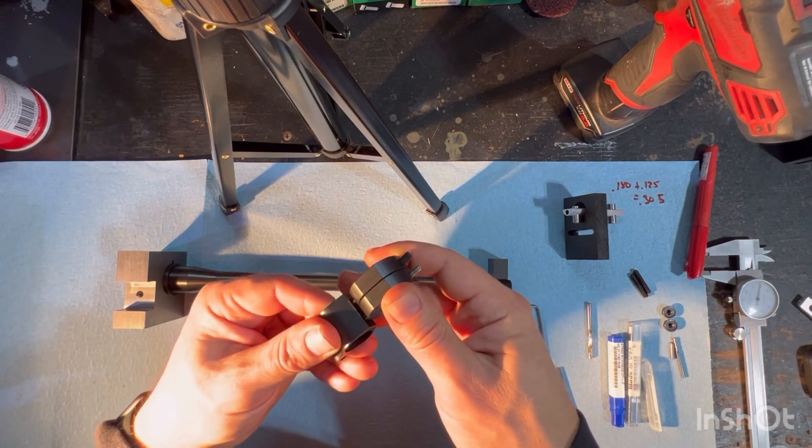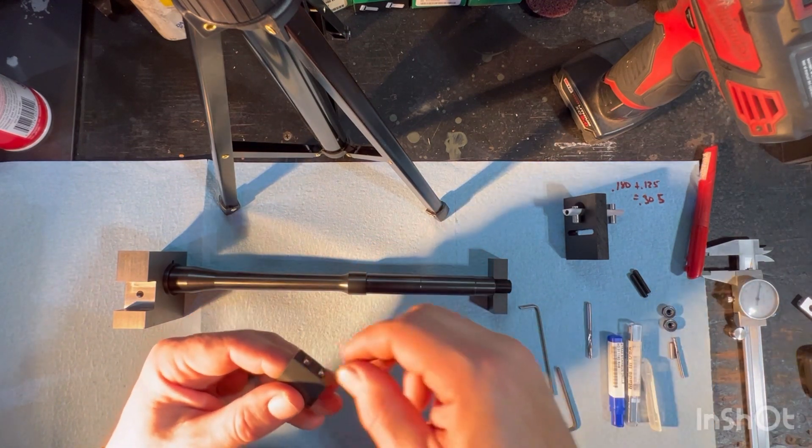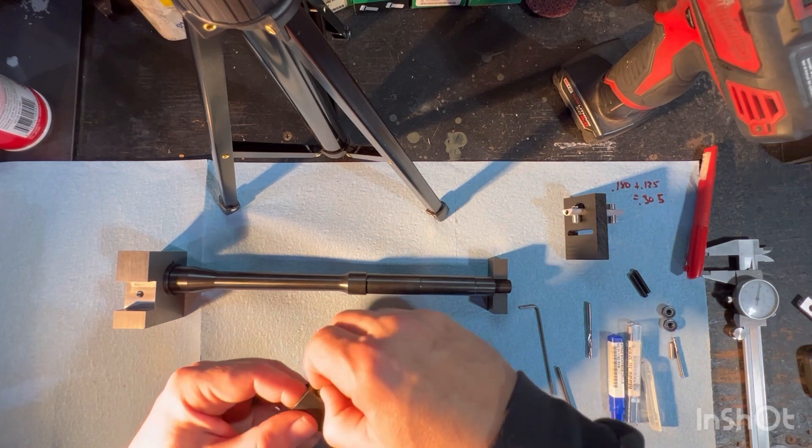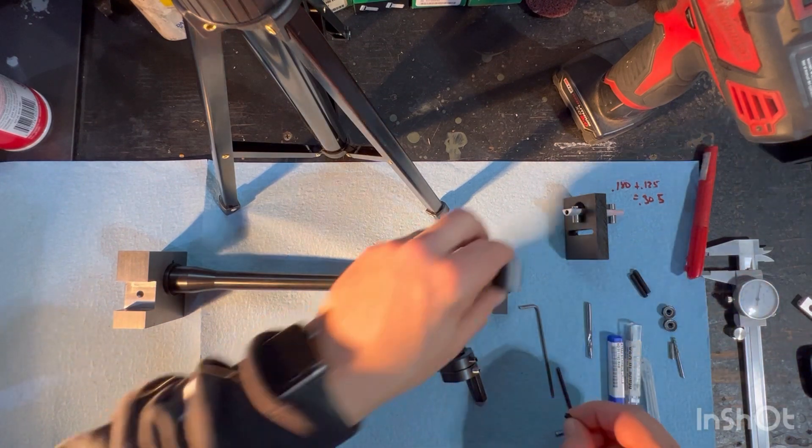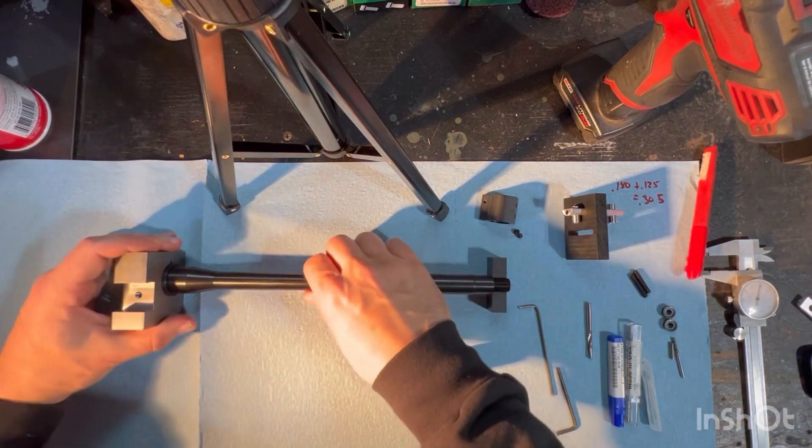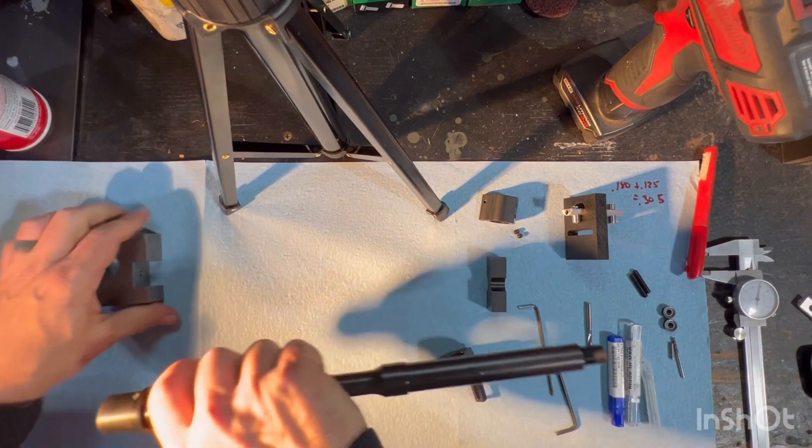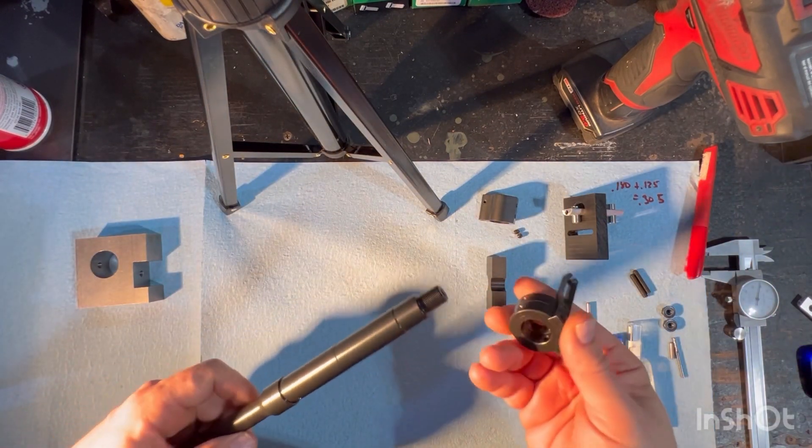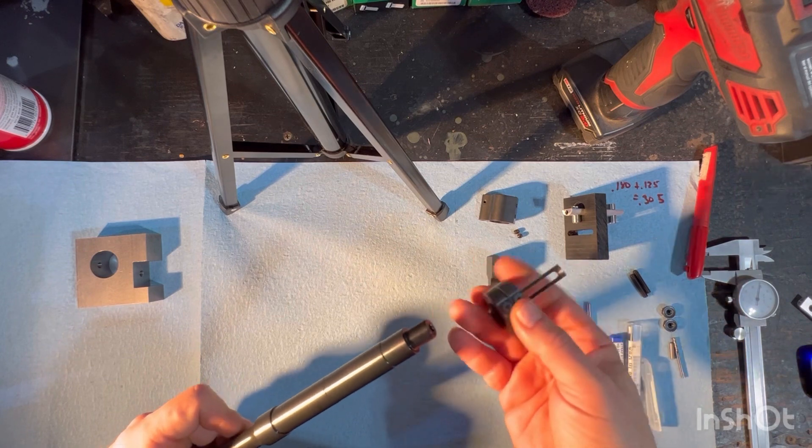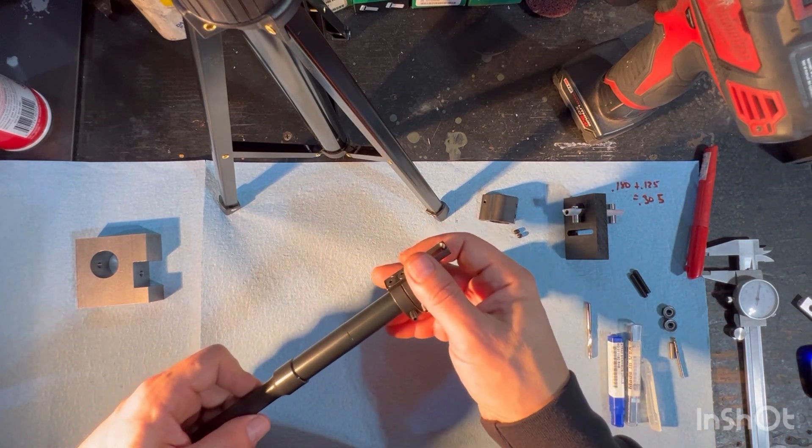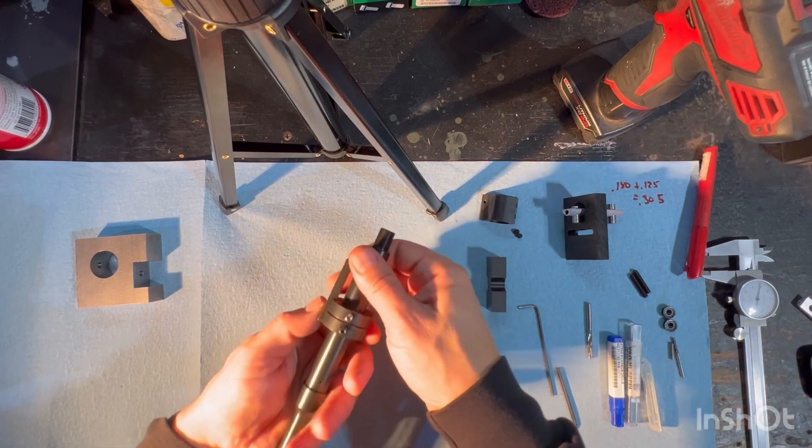So this isn't intended to be a how-to on how to dimple or anything like that, but we've got this barrel here. This is a Ballistic Advantage nitrated barrel. We've got our two set screws.